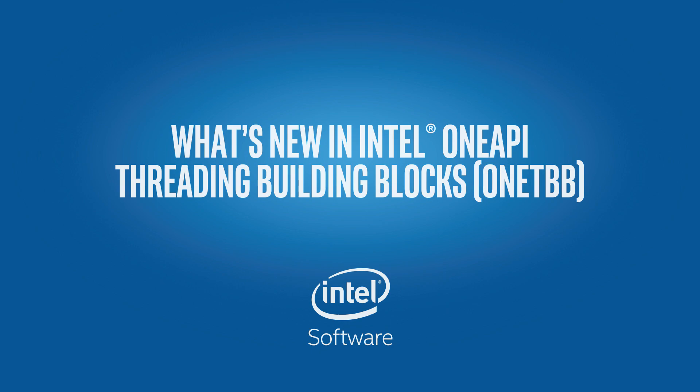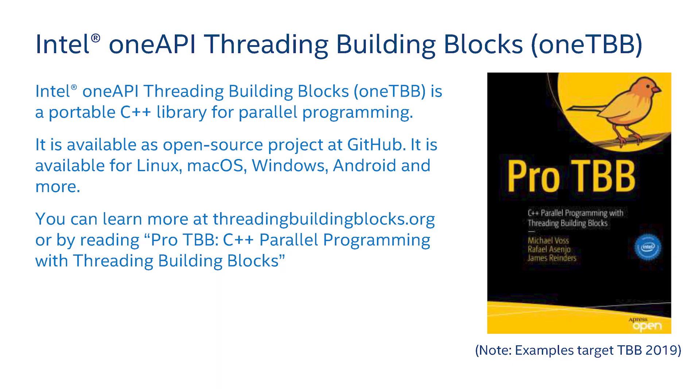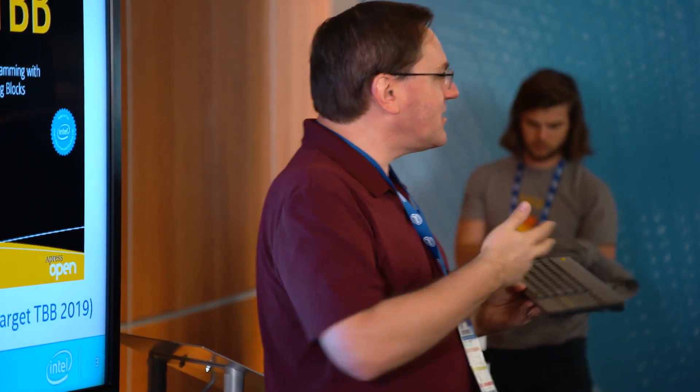I'm going to talk about what's new in TBB and why it's in OneAPI. TBB, in case you're not familiar with it, is a C++ library for simplifying threading. It is an open source project. As part of OneAPI, we are changing the name of the Intel-based product version to be called OneTBB, but it's continuity — it's the same project, and it will continue to be open source.